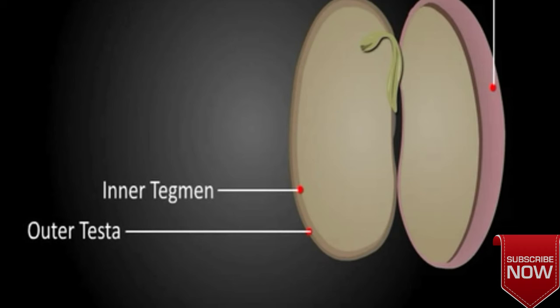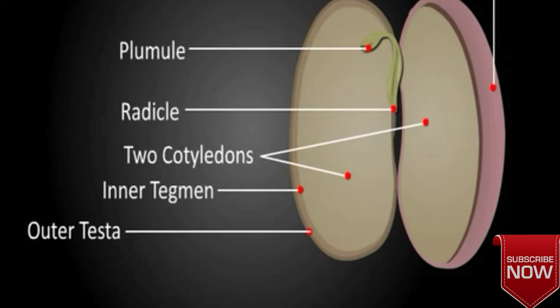The entire seed is occupied by the embryo and chiefly by the two cotyledons. On the other side of the seed, radicle and plumule are present.